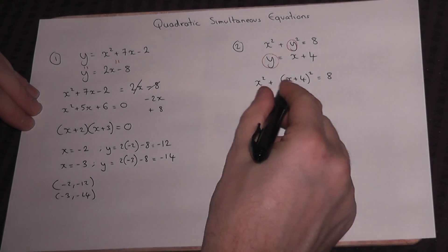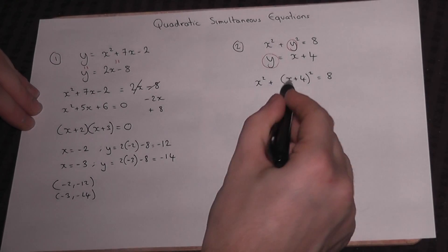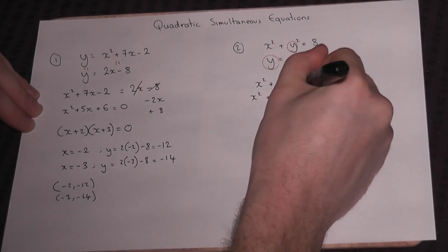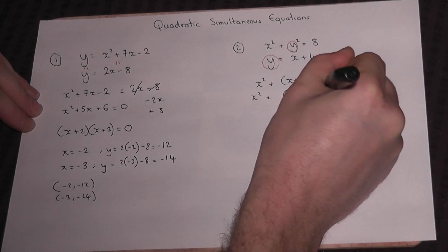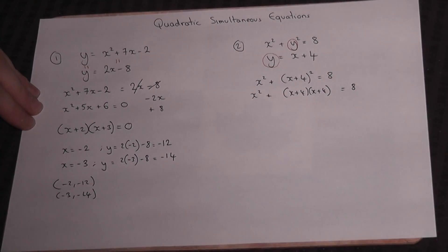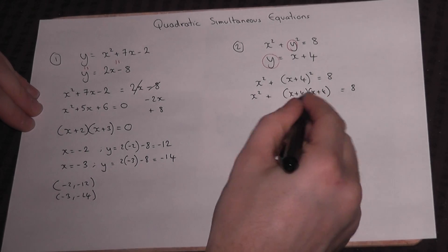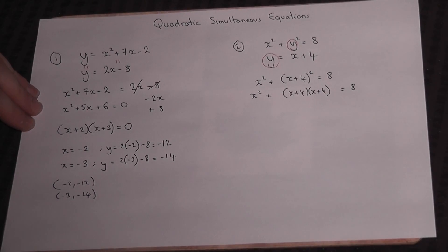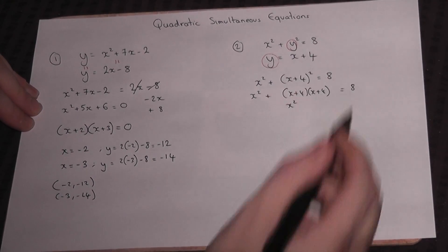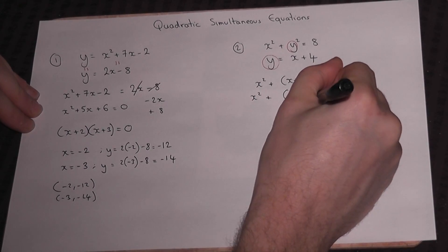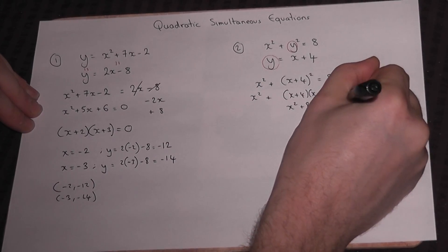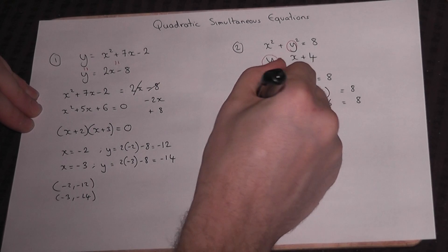We now expand this. Don't forget that (x + 4)² means (x + 4)(x + 4), and that equals 8. To expand this you use your normal expansion of brackets. It gives us x², then 4x and 4x is 8x, and 4 times 4 is 16. We have equals 8 and we have x².